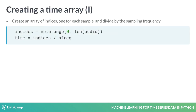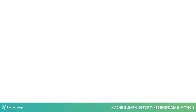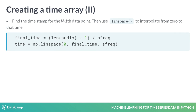Now we'll create an array of timestamps for our data. You have two options. The first is to generate a range of indices from zero to the number of data points in your audio file, then divide each index by the sampling frequency to get a time point for each data point. The second option is to calculate the final time point using a similar method, then use the Linspace function to generate evenly spaced numbers between zero and the final time point. In either case, you should have an array of numbers of the same length as your audio data.